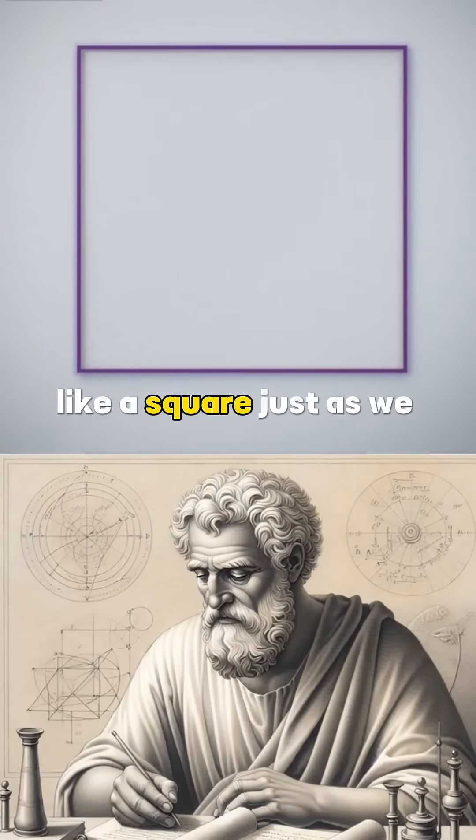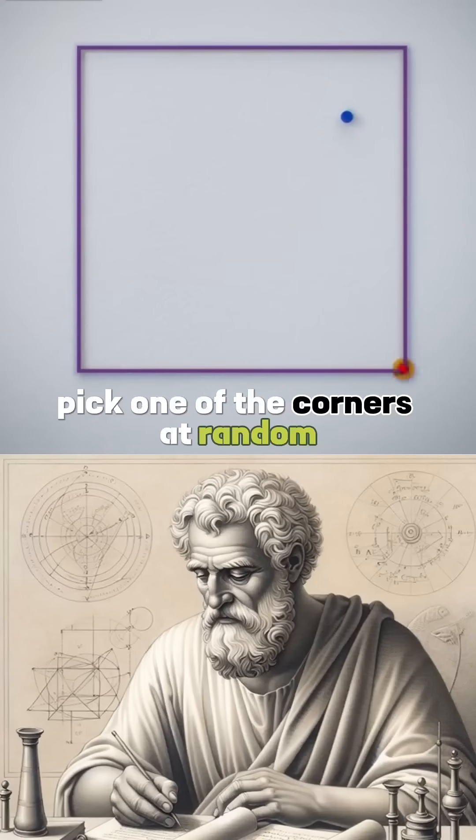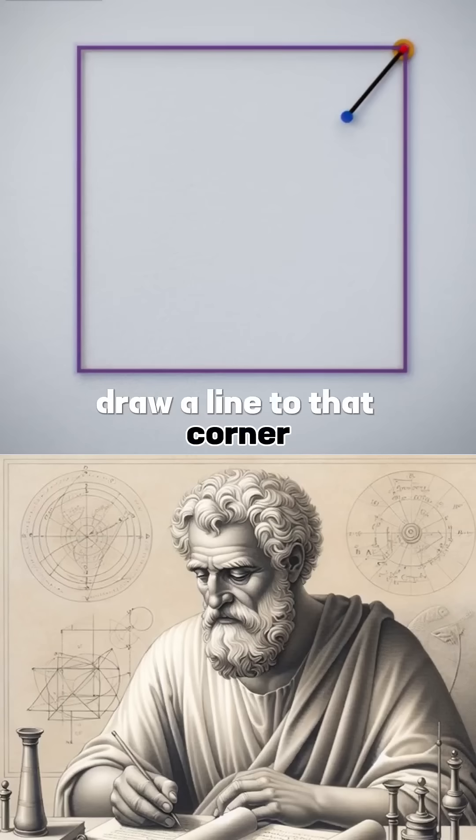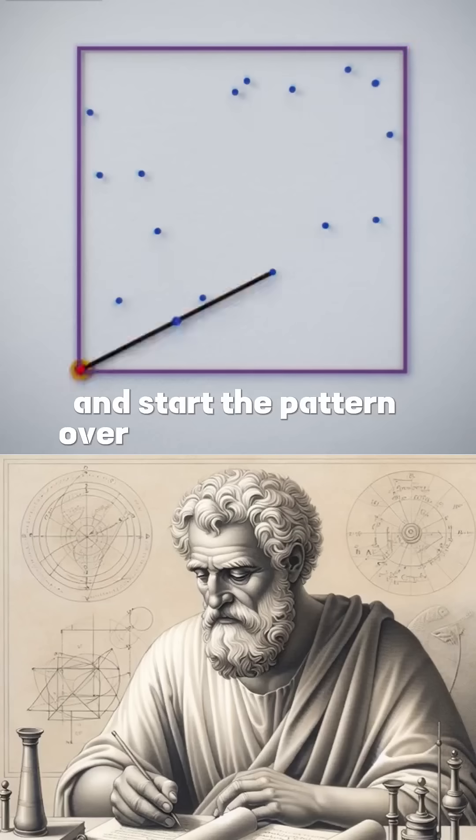Like a square. Just as we did with a triangle, we could start from a random location inside the shape, pick one of the corners at random, draw a line to that corner, and find the midpoint of that line. We remove the original point and start the pattern over with that midpoint.